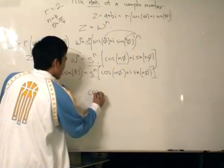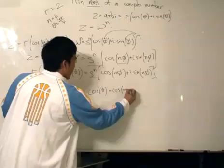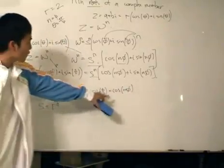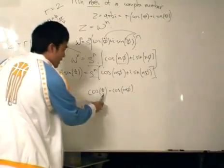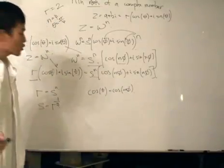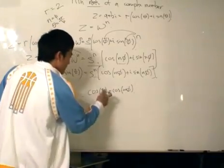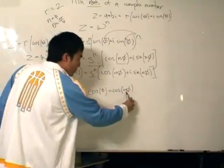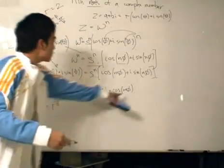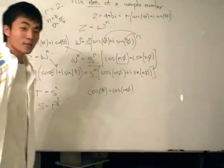And then, it gives us this. So, s now becomes r to the power of 1 over n. Okay, and then, okay, this is cos theta is equal to cos n phi. Now, at this point of time, you are very tempted to put theta is equal to n phi.